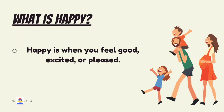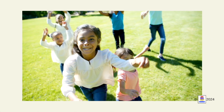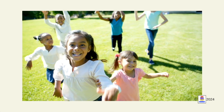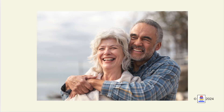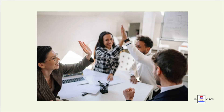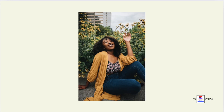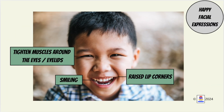What is happy? Happy is when you feel good, excited, or pleased. Let's look at some examples. You can often tell if someone is happy by looking at their face. A happy person might have a big smile with raised corners of their mouth and tightened muscles around their eyes.